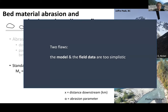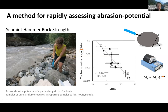This common approach fails me in two distinct ways. First, the model is inadequate. Second, the way we tend to gather field data is too simplistic to characterize or capture the patterns we end up seeing in the field. We've come up with a method for rapidly assessing the abrasion potential of sediment using Schmidt hammer rock strength to estimate the tumbler-based abrasion rate. Using the Schmidt hammer allows us to assess the abrasion potential of a particular grain in less than a minute, in contrast to taking sediment from the field, bringing it back to the lab, and spending hours or days tumbling per sample.